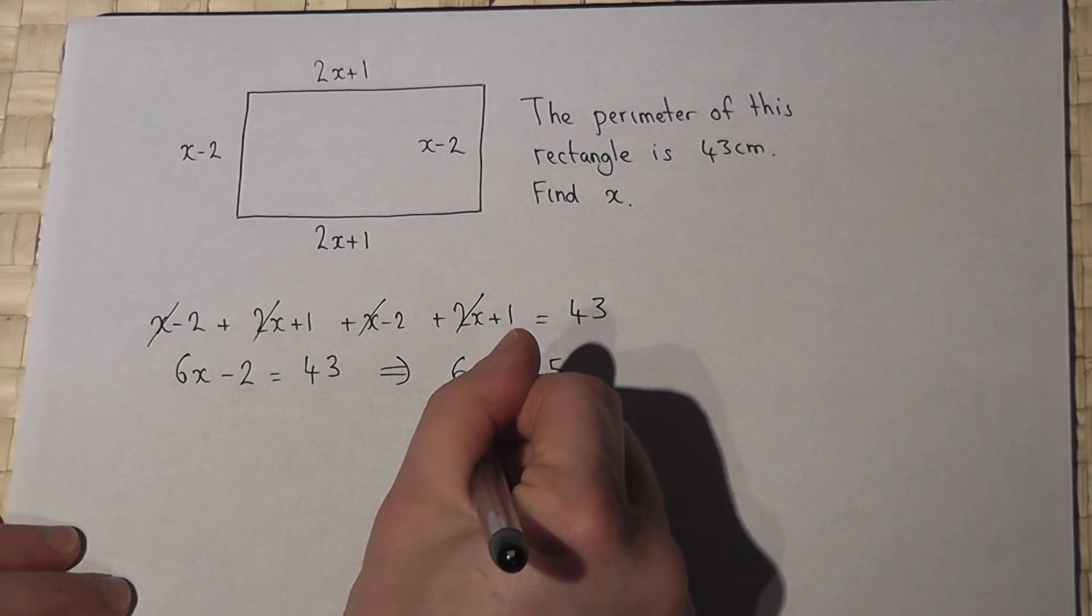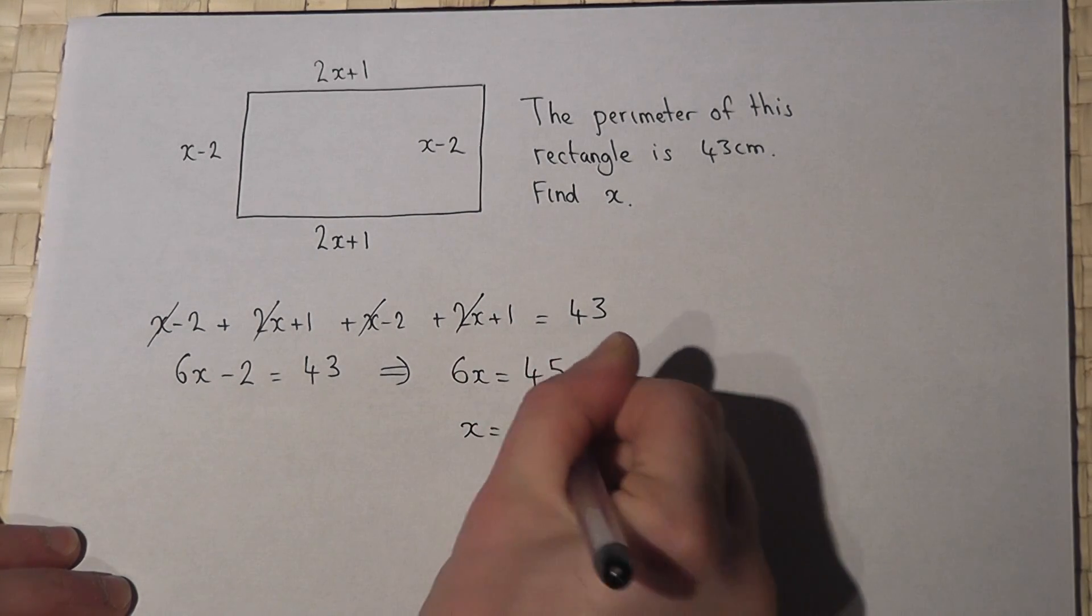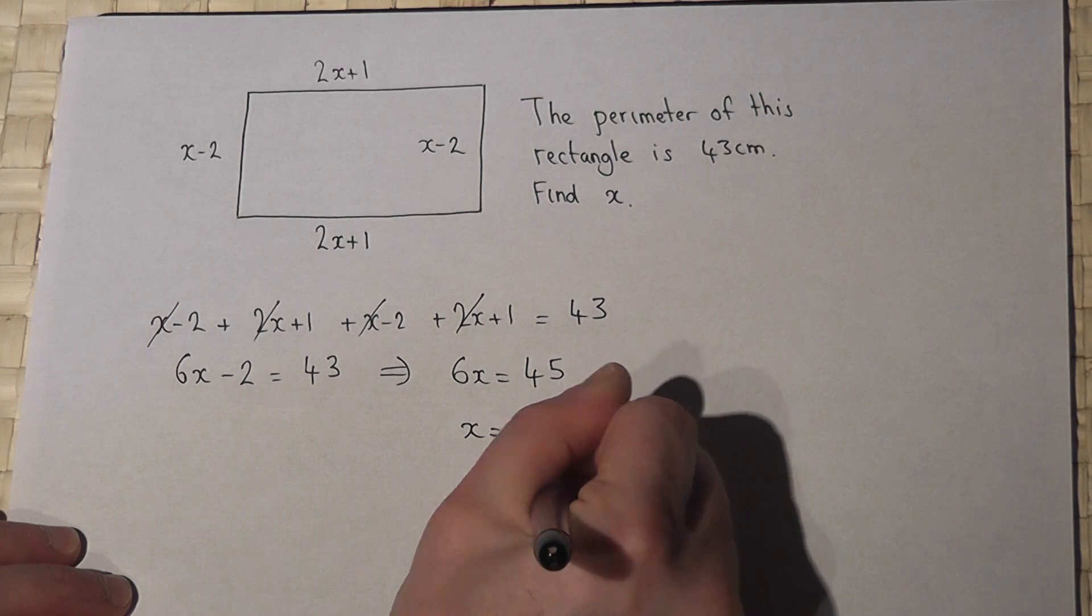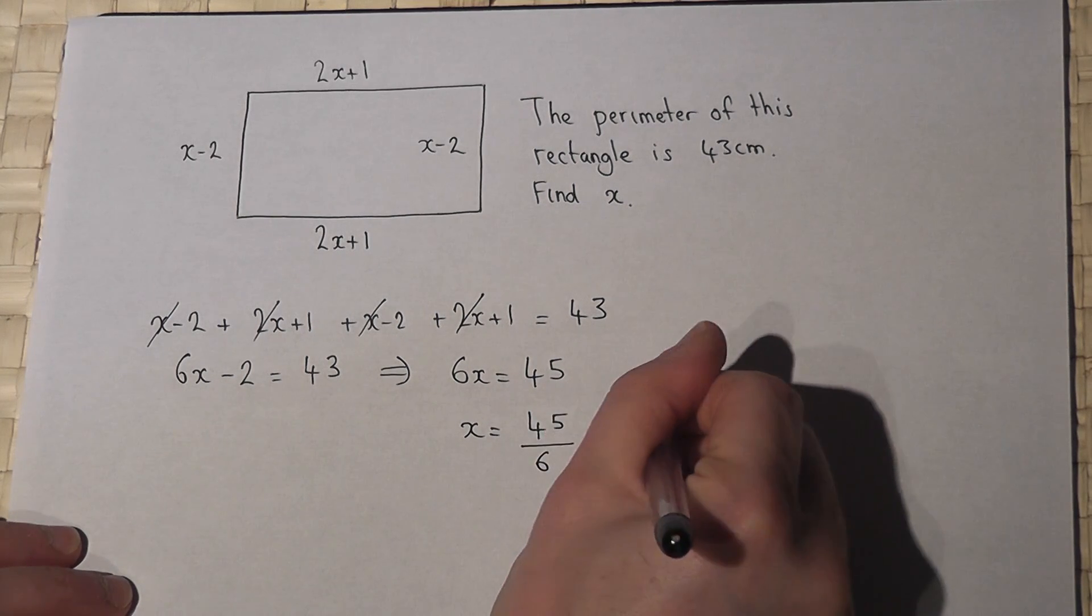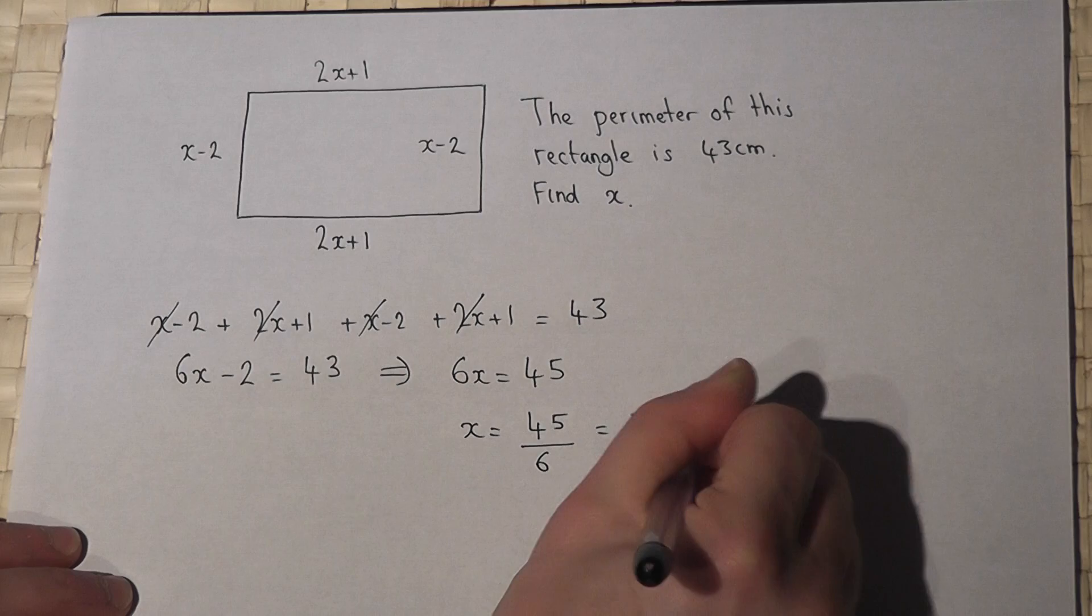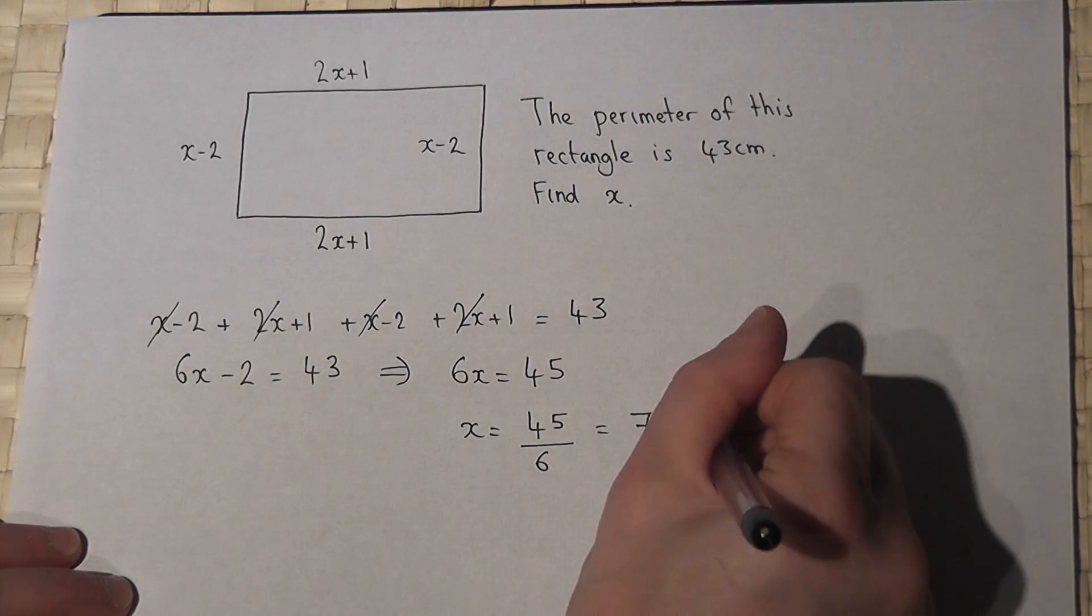Therefore to find x, I'll do x equals 45 divided by 6, which works out at 7.5. So x is 7.5 centimeters.